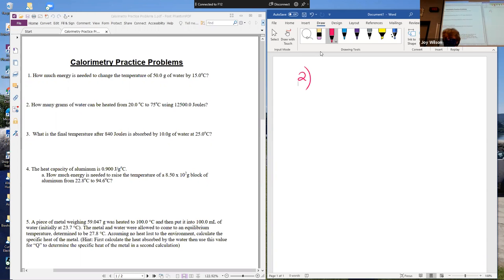So the first thing we have to ask ourselves is which one of our formulas do we use for this? You have two choices. You have the MCAT and you have the heat of something. This one's going to be an MCAT.